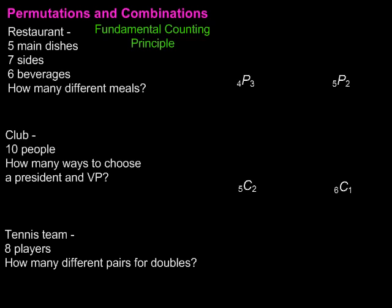So if we have a situation where there's three ways to choose one thing and two ways to choose another thing, we multiply three and two and find that there's a total of six ways to combine those two things. We'll start by using that with a restaurant where they have five main dishes, seven sides, and six beverages, and we're interested in how many different meals that can produce.